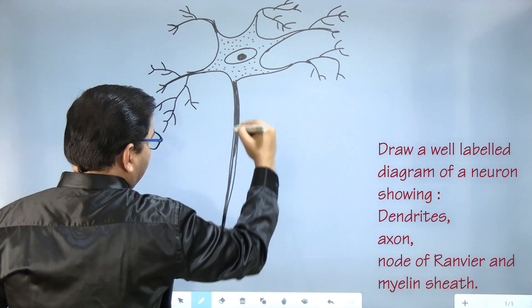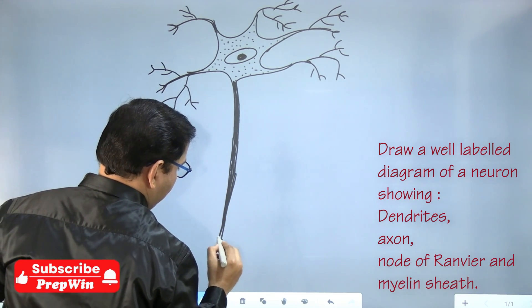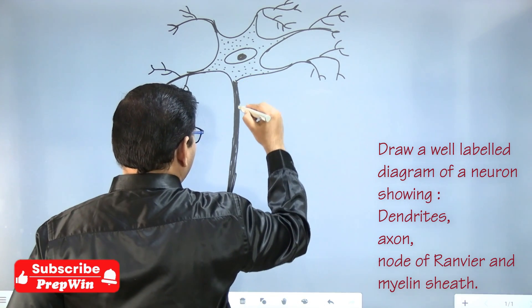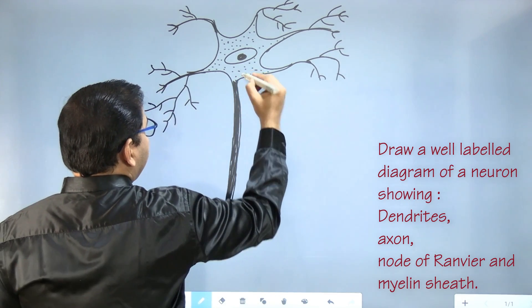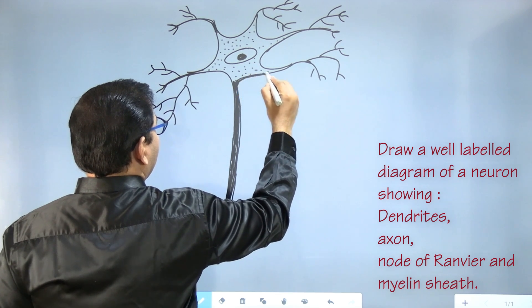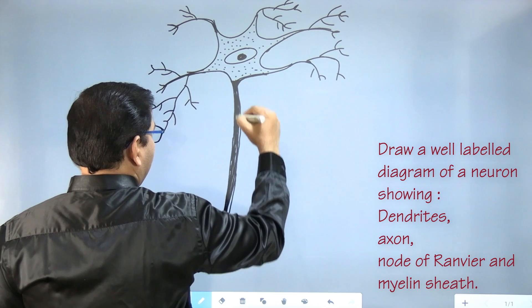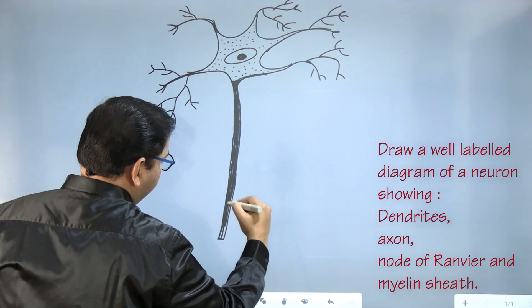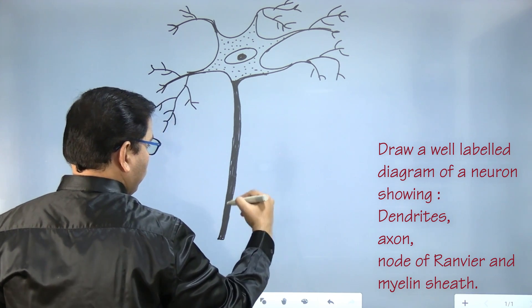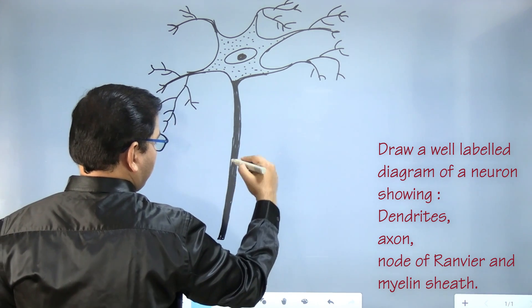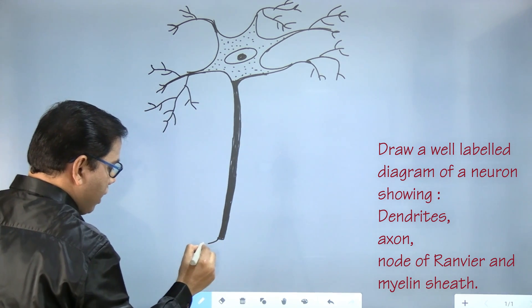And this is called axon. We will try to keep this axon of equal thickness. Axon followed by axon endings.